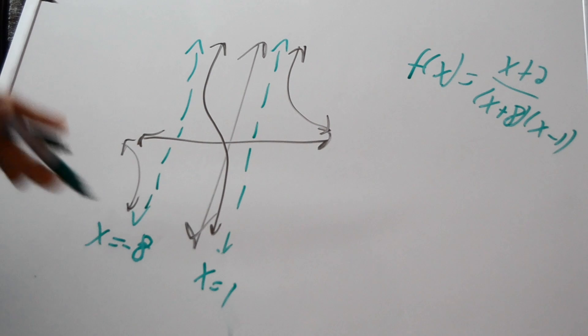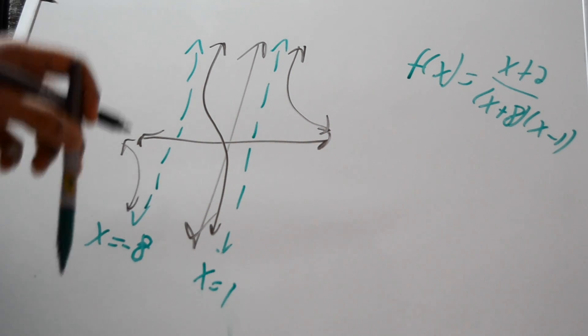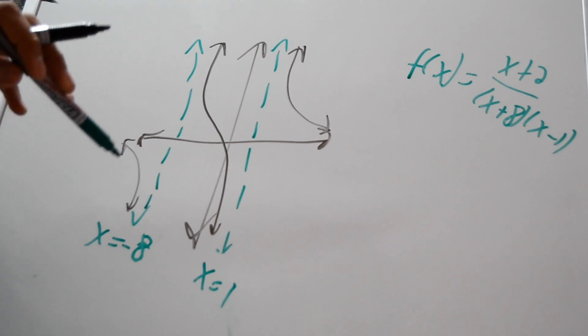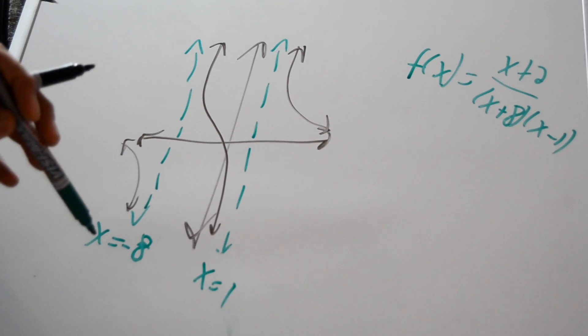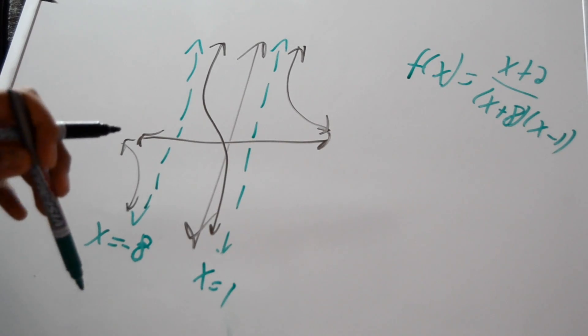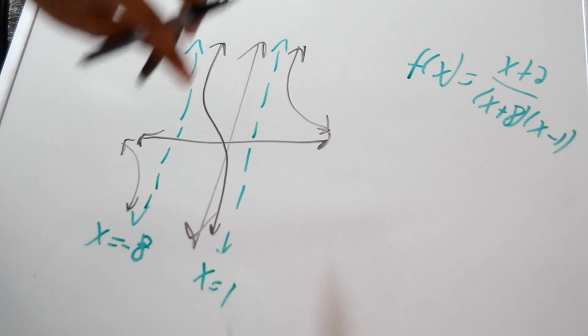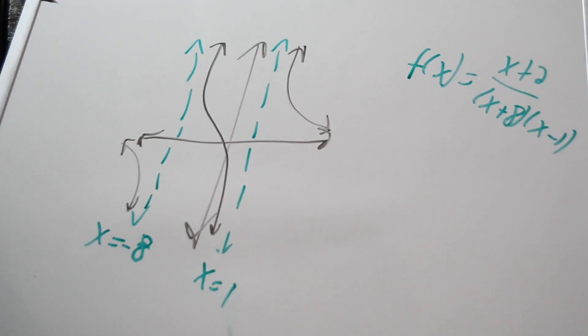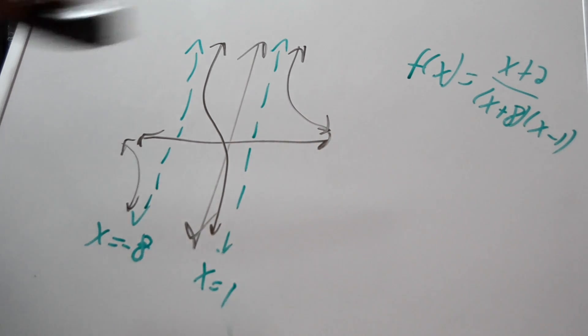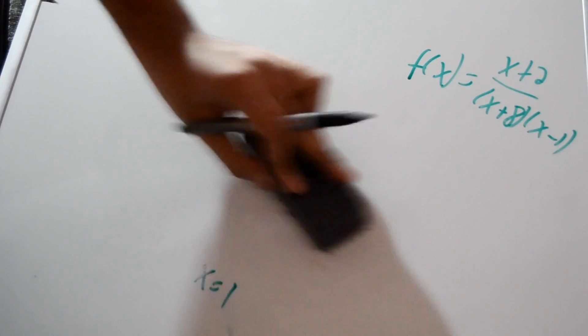As the graph goes towards negative infinity it will never touch this line — that's why it's called an asymptote. As the graph goes up towards infinity they will never touch either. These are vertical asymptotes, and horizontal asymptotes also use concepts of limits.